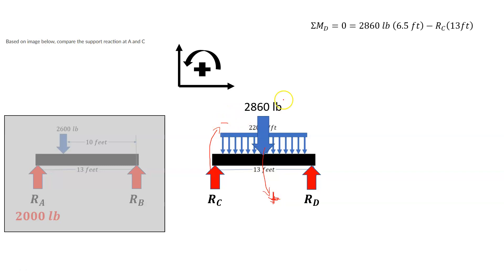So we take the sum of moments about D, it's going to equal to 0, because we're in static equilibrium. 2860 pounds times 6.5 feet, it's at the midpoint, minus the support reaction of C times 13 feet. We multiply that out, it's 18,590 foot-pounds minus the support reaction at C times 13 feet.